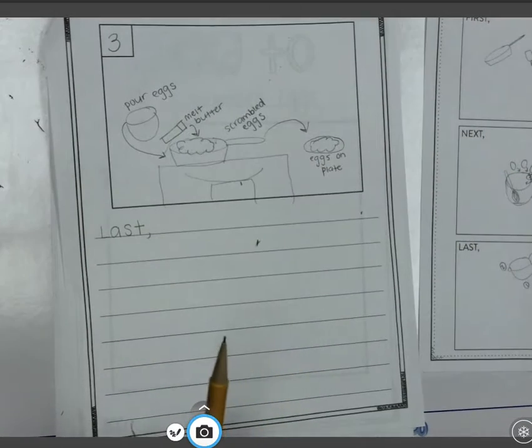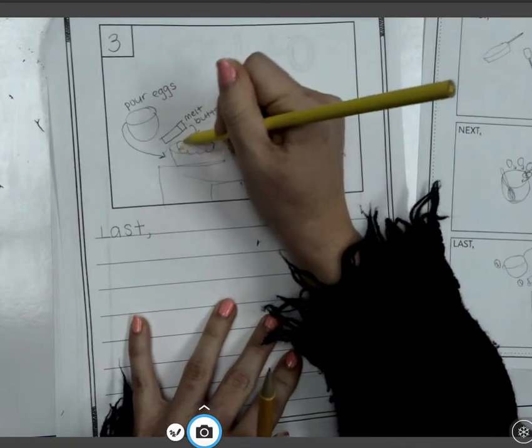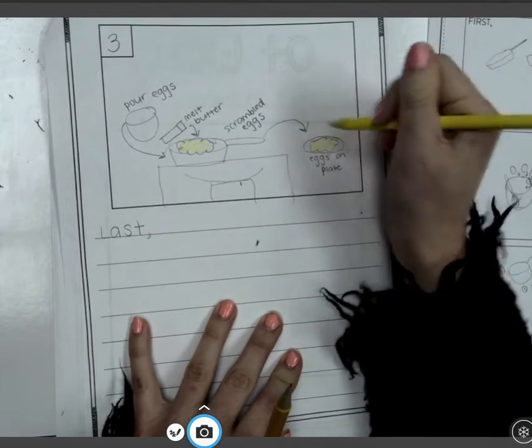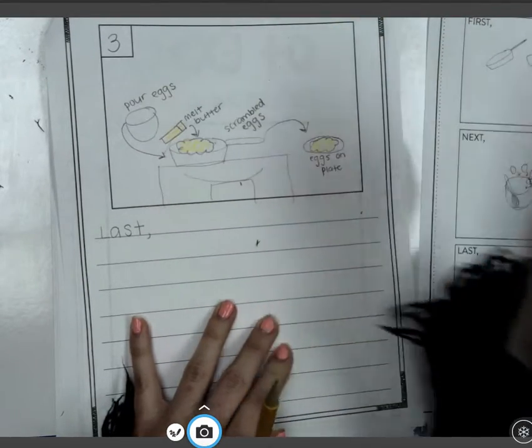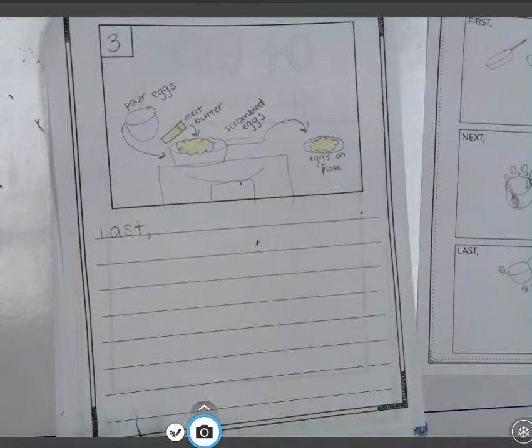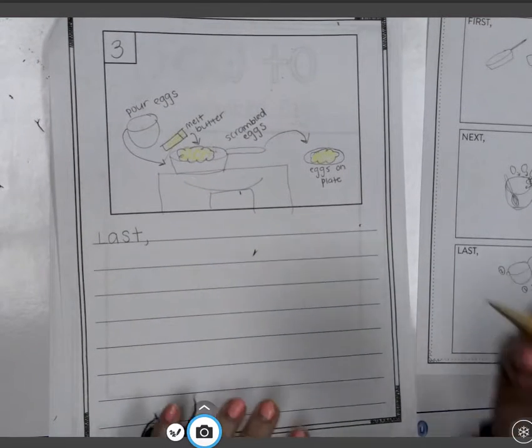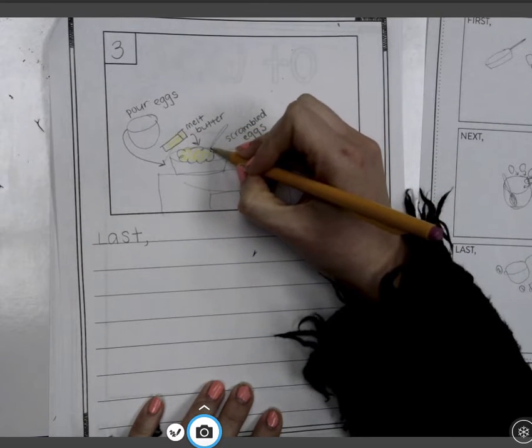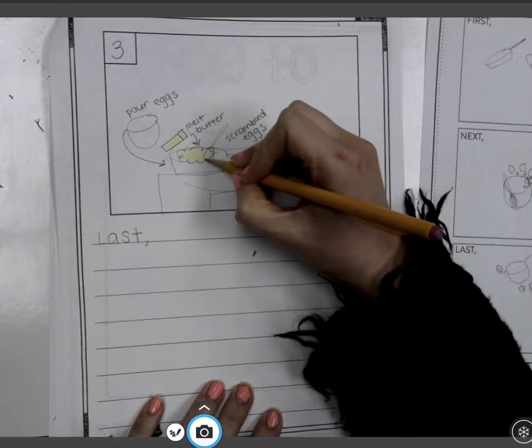And my scrambled eggs should be pretty yellow. So I'm going to color them yellow. And then my butter is going to be kind of yellow. And then I would color my stove, my pan. I'll have my spatula in here too, because that's what I like to do. I like to push my eggs around using my spatula.